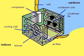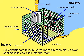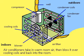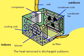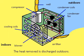Air conditioners are heat exchangers. They take warm air from a room, blow it over cooling coils to remove the heat, and then return it to the room. The heat absorbed by the cooling coils is then blown outdoors.